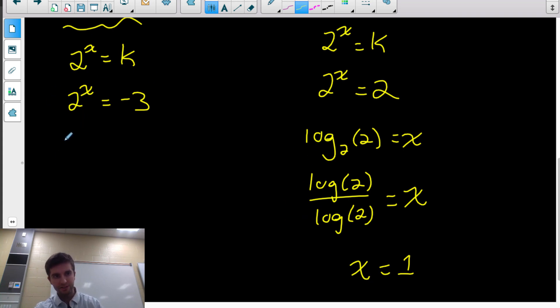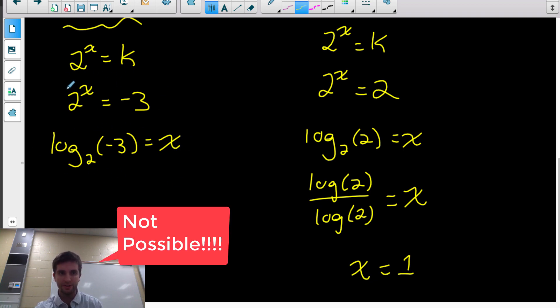What about over here? So if I change this to logarithmic form, it would be log base 2 of negative 3 equals x. So I'd be trying to figure out what exponent can I put on 2 to get negative 3. That's what this logarithm means, and that's what this equation is asking us for.